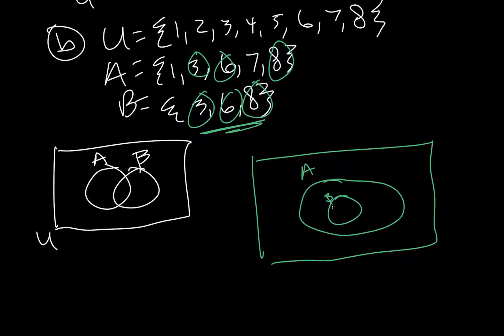So everything that's found in B is also found in A. So, I'm gonna say three, six, eight. And then, I'm going to write the one and the seven, which are still in A, but not in B. So, those are within the circle of A. And now, we need to check to see what didn't show up in any of them.